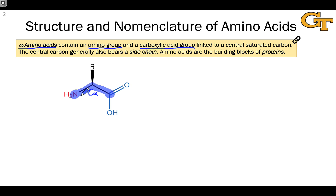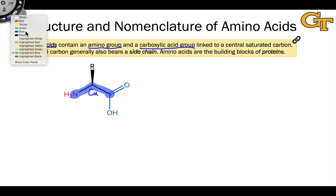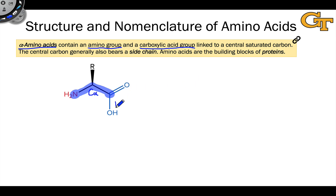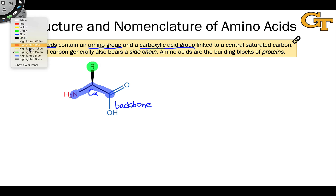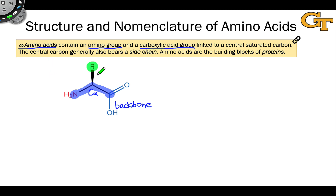For this reason, these three atoms — the amino nitrogen, alpha carbon, and carbonyl carbon — form a contiguous chain of atoms within a protein called the backbone. Linked to the alpha carbon, we also find an R group, which can have one of about twenty different structures, and the R group, because it branches from the backbone, is called the side chain.